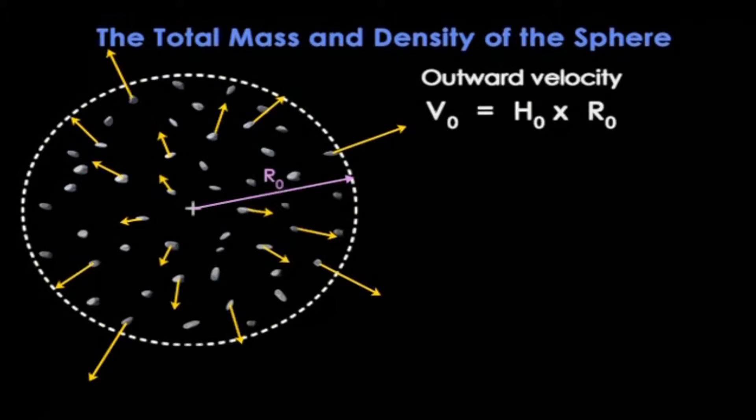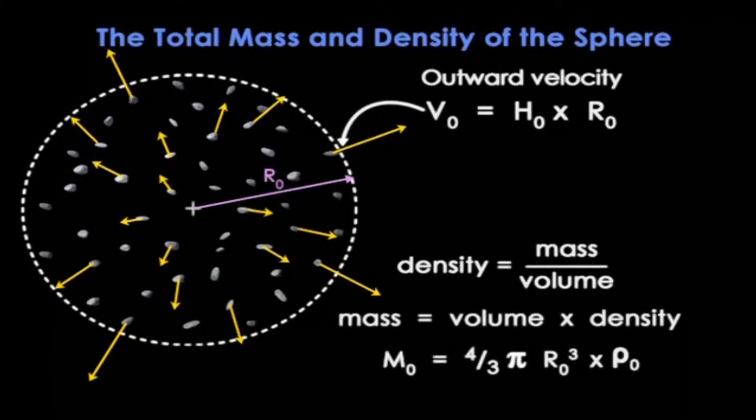So the sphere has radius R₀ with rocks moving out with a Hubble law. So, the outermost rock has outward velocity v₀ which equals H₀ times R₀, where H₀ is a Hubble constant that defines the initial velocity pattern. Also, since density is simply mass over volume, we have an expression for the total mass M₀ of the rocks. It's just volume times density. That's 4/3 π R₀³ times ρ₀, where ρ₀ is the average density within our sphere.